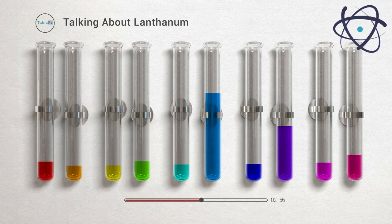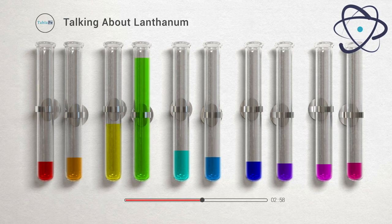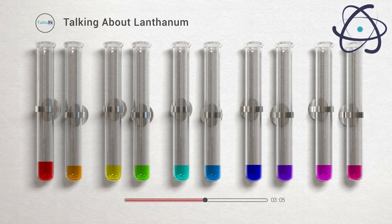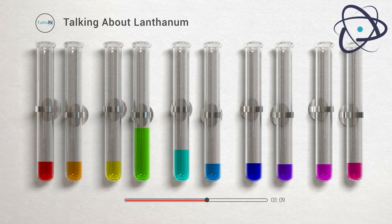Lanthanum is a ductile, soft metal. In addition to that, it is pliable and may be sliced with a knife. Aside from that, lanthanum is resistant to corrosion. It has a relatively high melting point of 920 degrees Celsius.